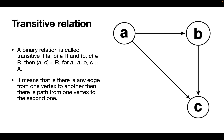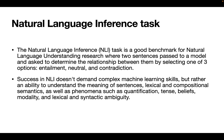What is the natural language inference task? It is a good benchmark for natural language understanding. Basically, this task takes two sentences and the goal is to predict the label: entailment, neutral, or contradiction. A good example of entailment is 'I was in Paris' and 'I visited France' — we can infer from the first sentence to the second, meaning these two sentences have an entailment relation.